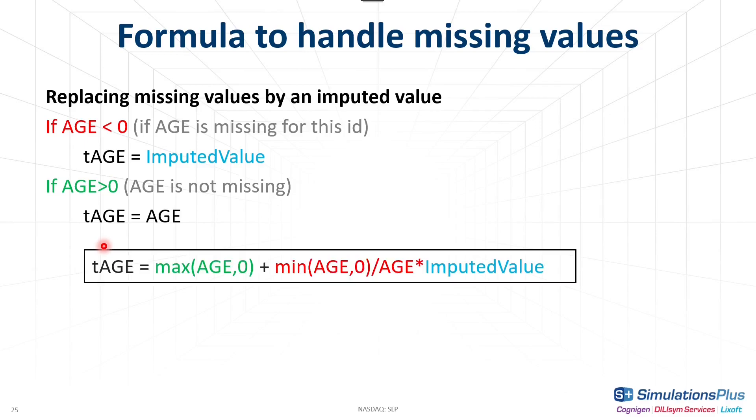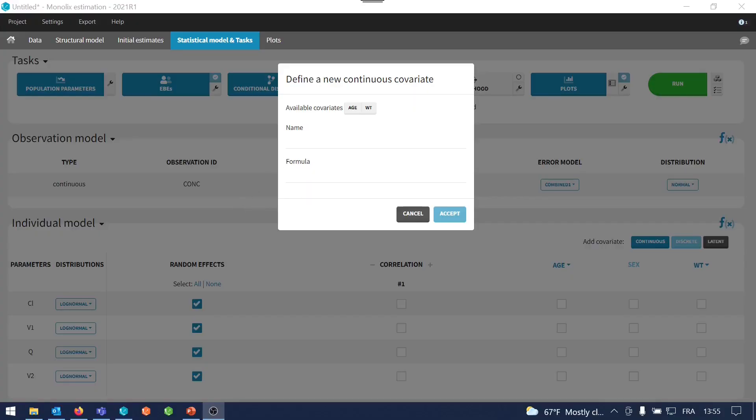So this is the formula I'm going to enter in the formula box to create my continuous covariates. I create a covariate for age for each of my hypotheses. So I will create a transformed age in case I use the median for missing values. I use my formula, and instead of the imputed value, I use the median 31.